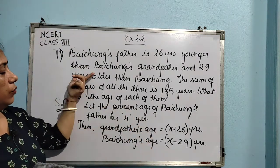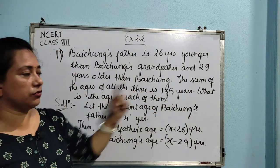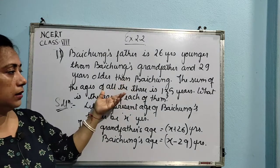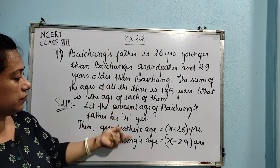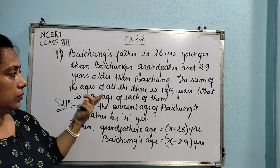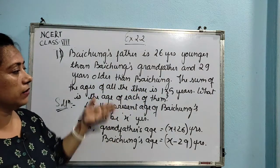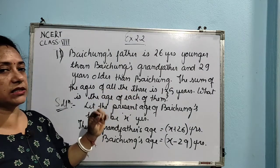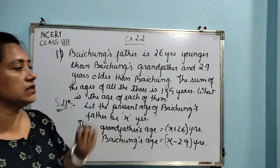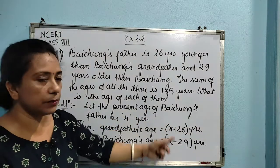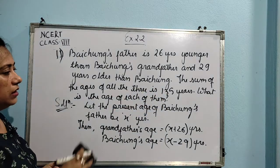Now we form the equation. The sum of the ages of all three is 135 years. When no specific time is mentioned in the question, we understand they are talking about the present ages only. So we add all three present ages and set them equal to 135.